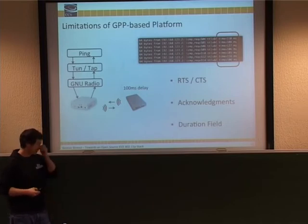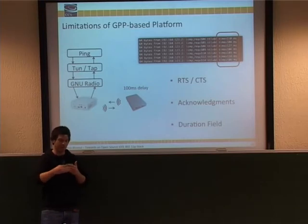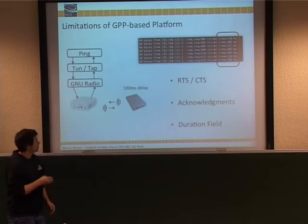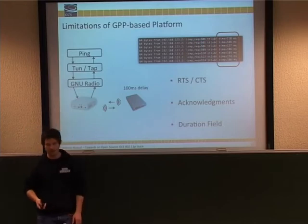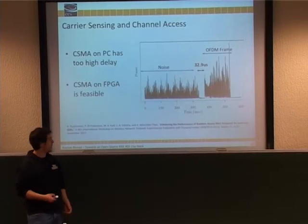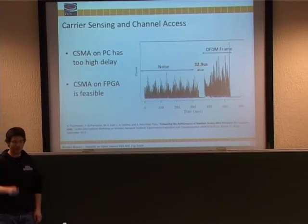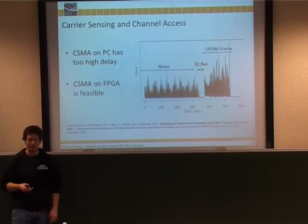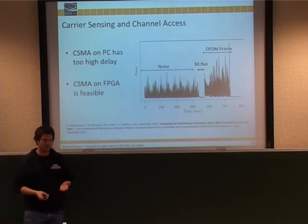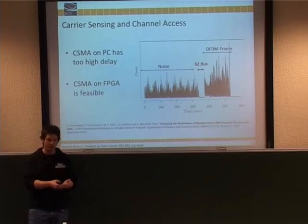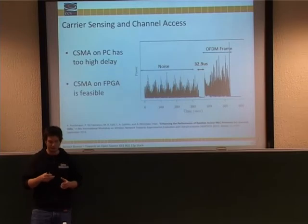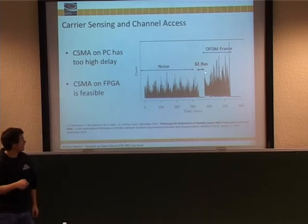There's also a duration field that specifies some amount of time that you should virtually block the channel even though the actual frame is physically already gone. This is something that, at least with this architecture, will not work and will not be standard compliant. But carrier sensing and channel access I think we can get working. I talked with Andre in Miami last year and he mentioned they have an FPGA implementation for channel sensing. He shared that with me and we were working on it — you can preload your Wi-Fi frame on the FPGA of the USRP and then the USRP does channel sensing for you.